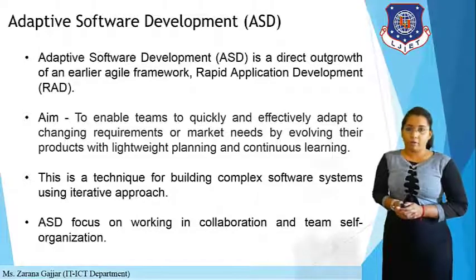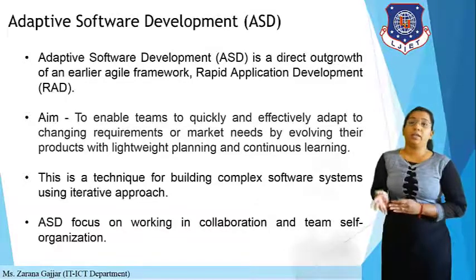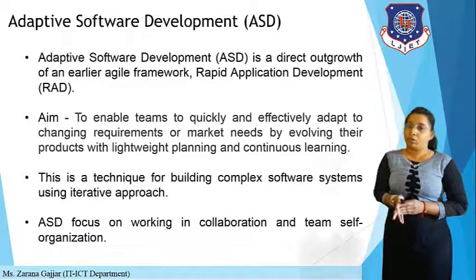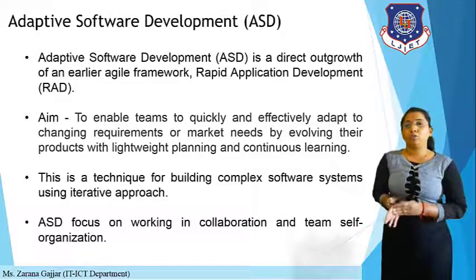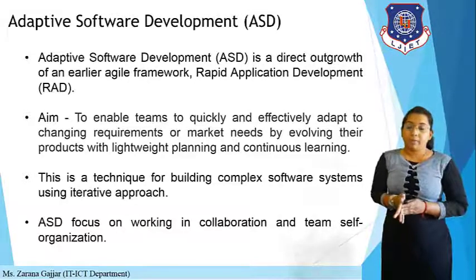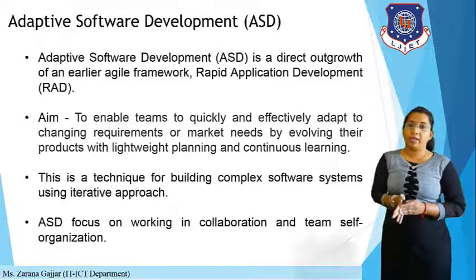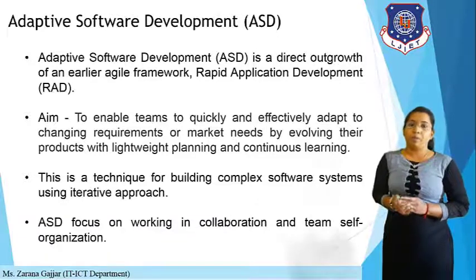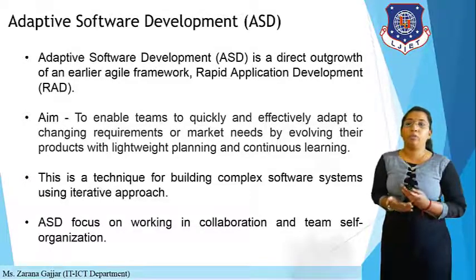Adaptive Software Development was proposed by Jim Heisen. ASD is a direct outgrowth of a real agile framework — Rapid Application Development. In Unit 1, we already learned about the RAD model. ASD is an evolution of that model. Its aim is to enable teams to quickly and effectively adapt to changing requirements or market needs by evolving their products with lightweight planning and continuous learning.